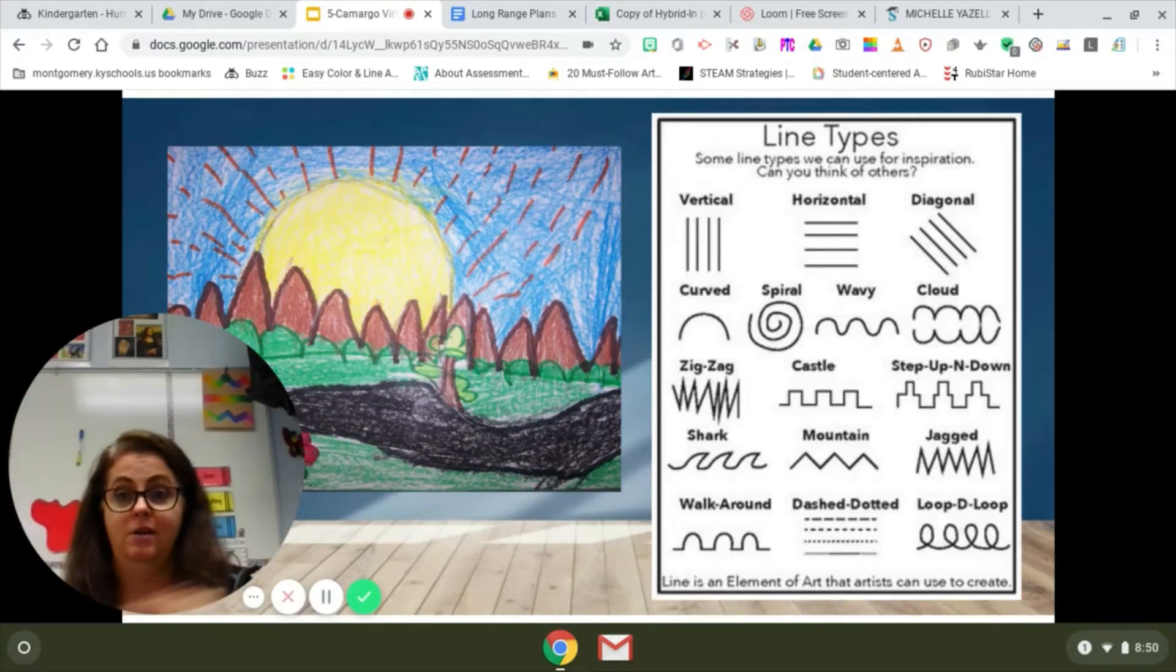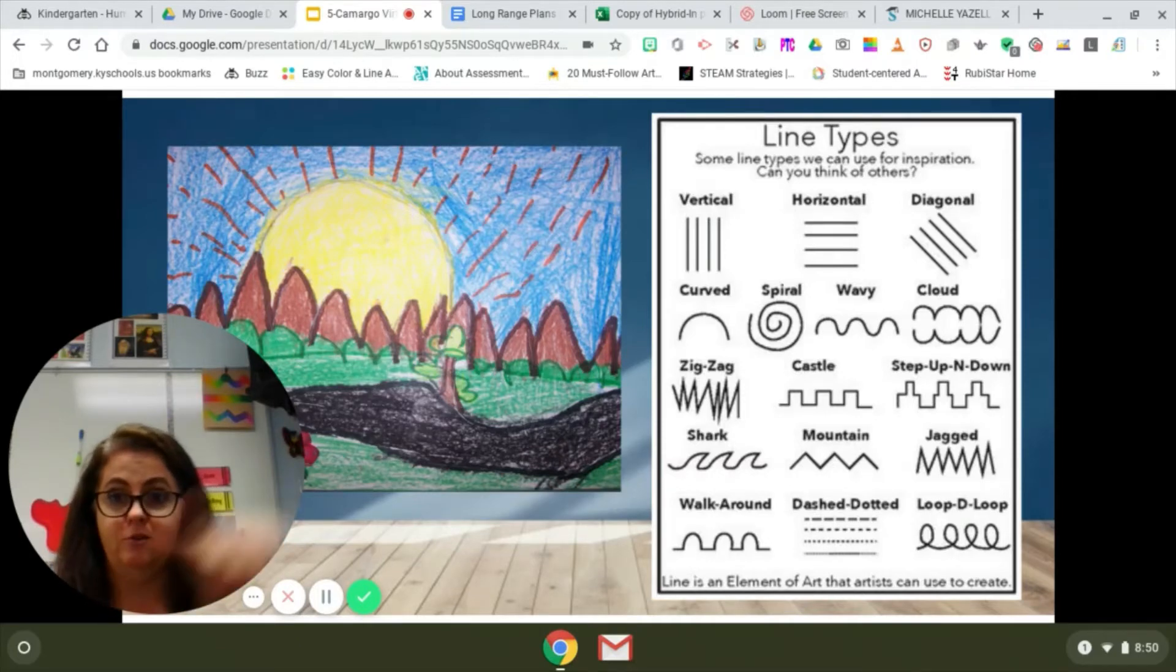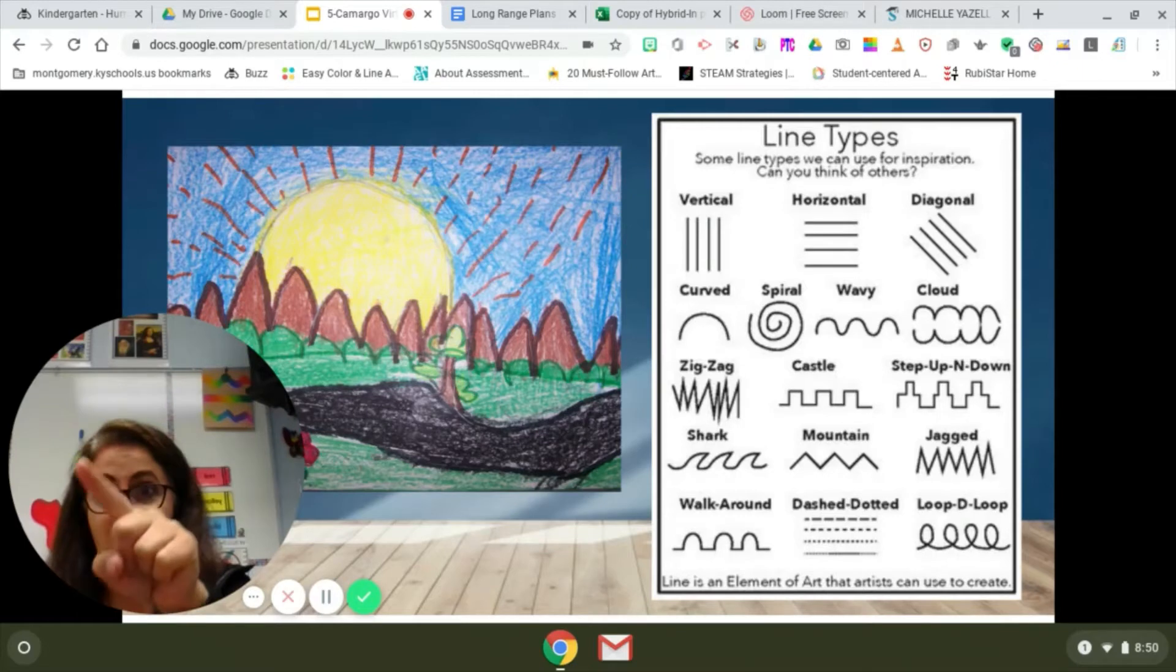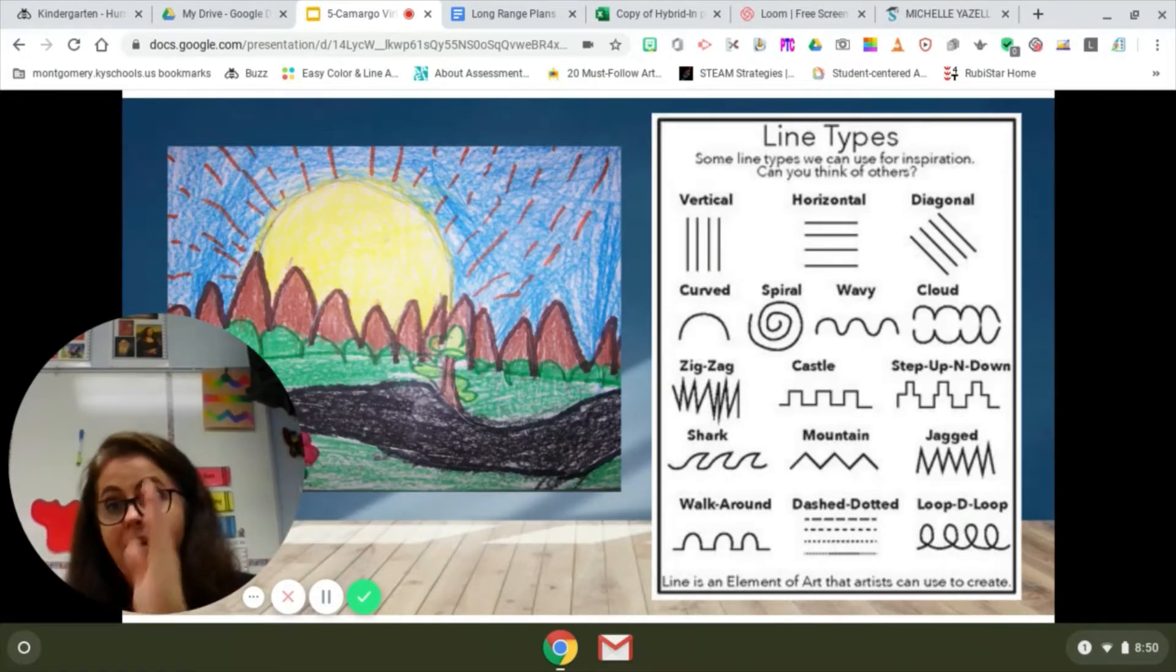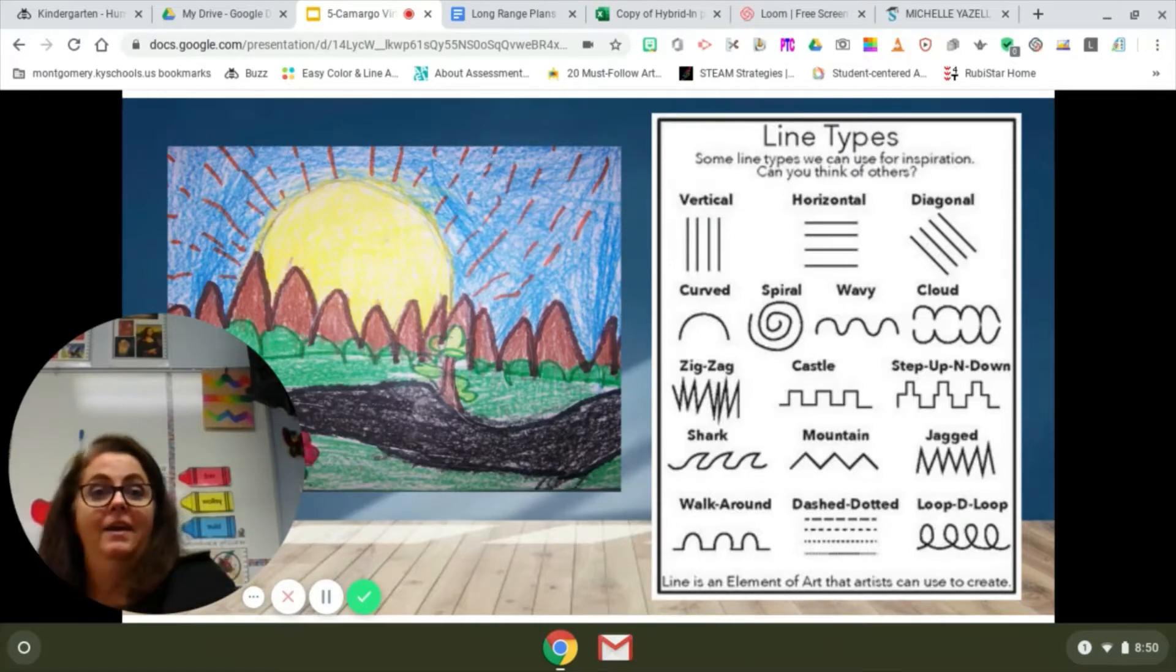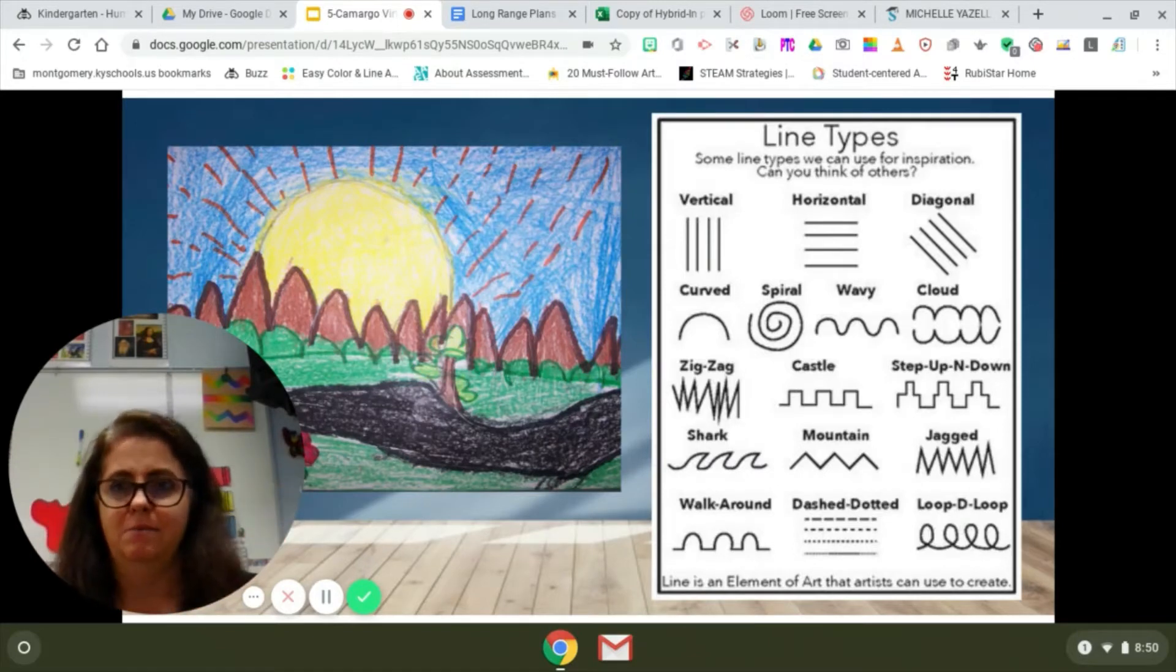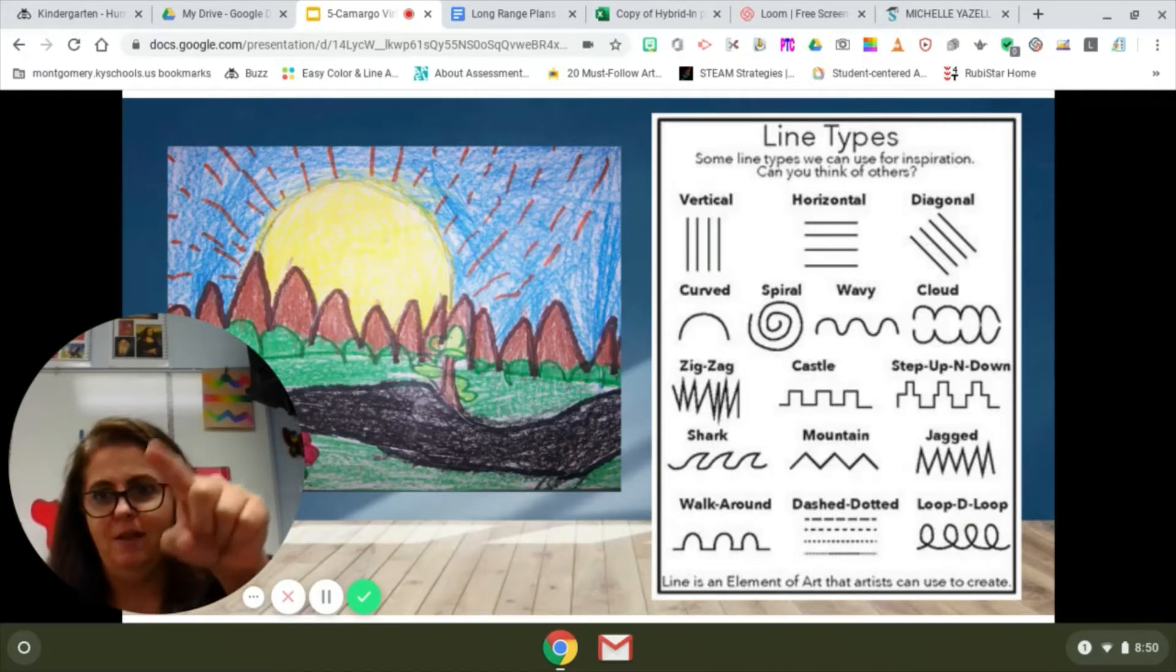There's a curve line, spiral, wavy, and then they call this one the cloud line. I think it's kind of bumpy. Sometimes boys and girls call that a bumpy line. It can go up like this and make waves, or it can go around like this and make clouds.